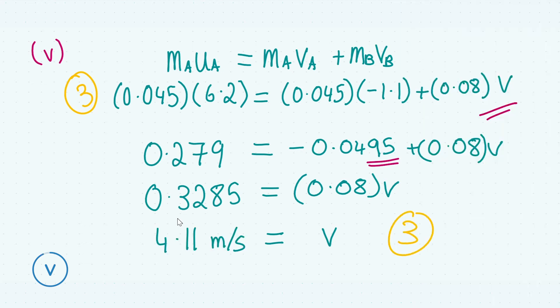Adding both sides and dividing through by 0.08 to get v, we get that the velocity is approximately 4.11 meters per second, giving us our final three marks. Notice that the velocity of B is positive, therefore it is moving to the left, because we defined the right as negative velocity direction.